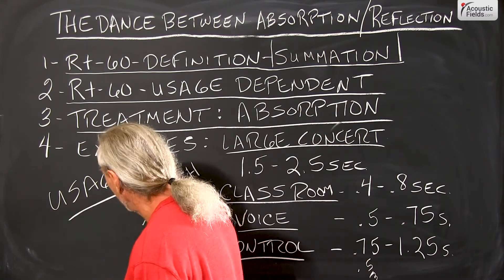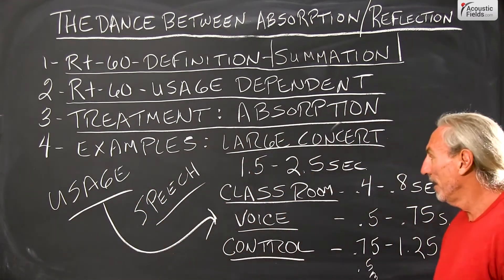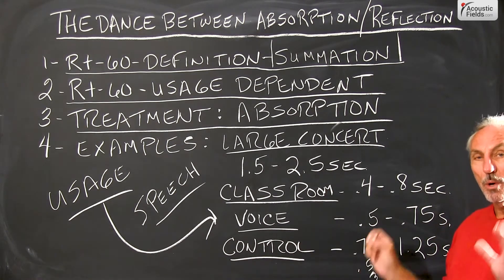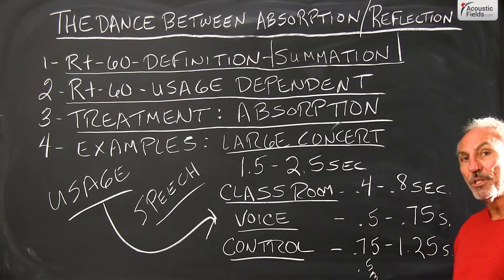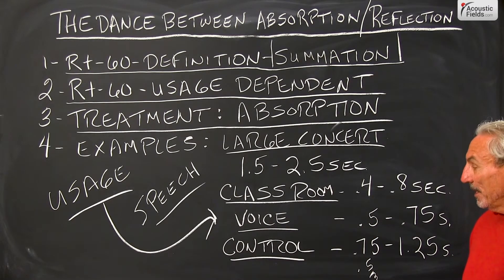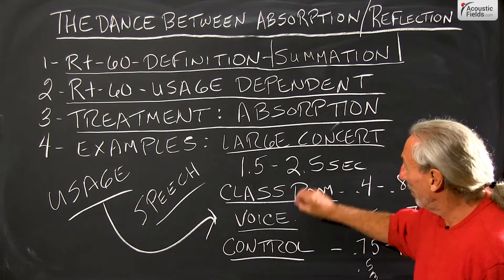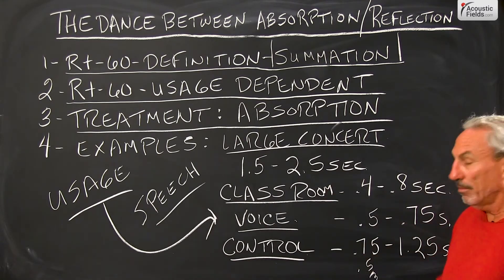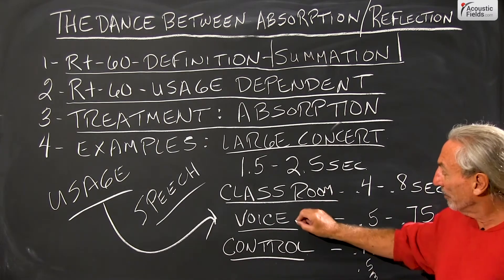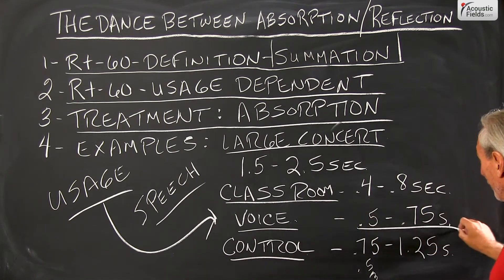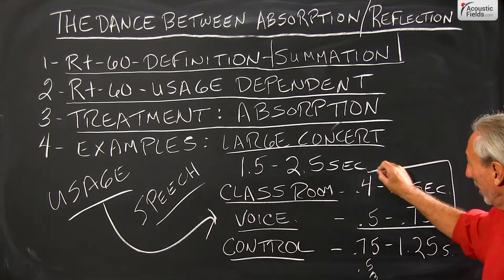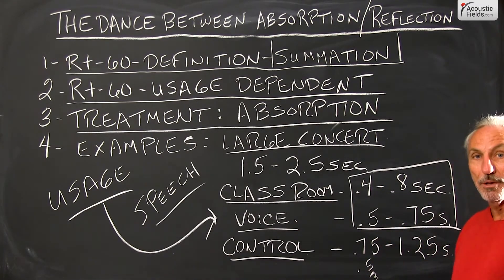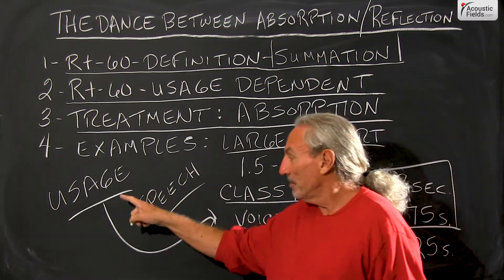If you look at all of these situations here - large concert hall, classroom, voice, control - usage. What are you doing in the room? And once you decide what you're doing in the room, and please don't try to do too many things, don't try to do voice in a large concert hall. Don't try to do voice in a control room, which a lot of people try to do. Don't try to do voice in a classroom, because look, the RT60 times are close. But when you're recording voice, the microphone is going to hear more than this numerical difference shows. So usage is critical.